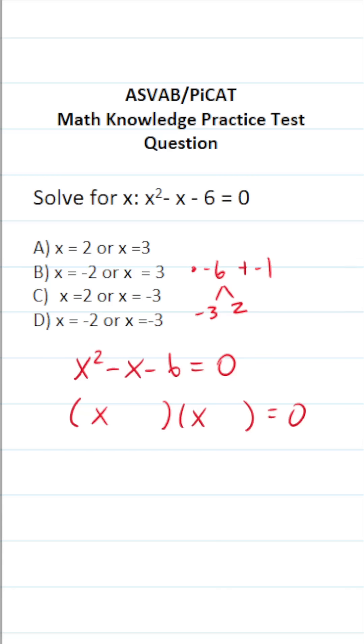Again, negative 3 times positive 2 is negative 6. Negative 3 plus 2 is negative 1. So this is x minus 3, x plus 2.